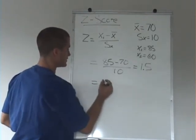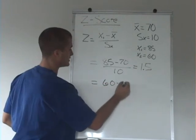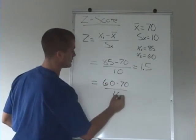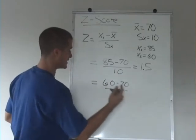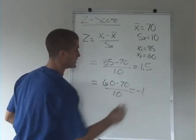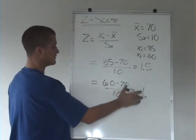If we took the 60, we're taking 60 minus 70 over 10. 60 minus 70 is negative 10 over 10, and we get negative 1. So the z-score is negative 1.